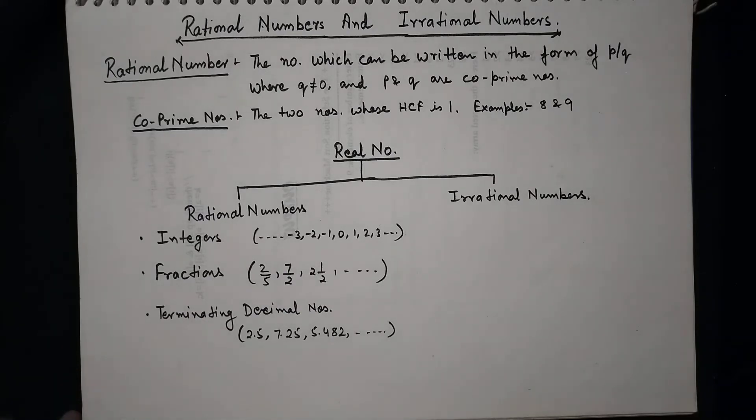We also have the condition in which the remainder is never zero. That is non-terminating but repeating decimal number. That is also considered in rational numbers. Here we go for non-terminating recurring decimal numbers.